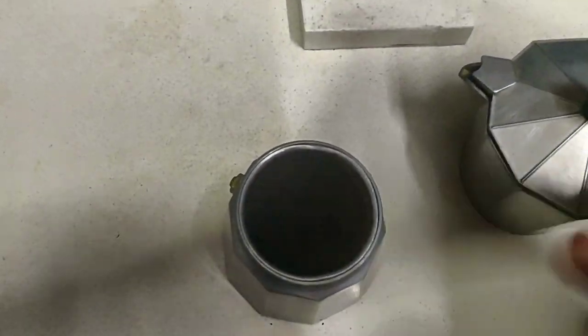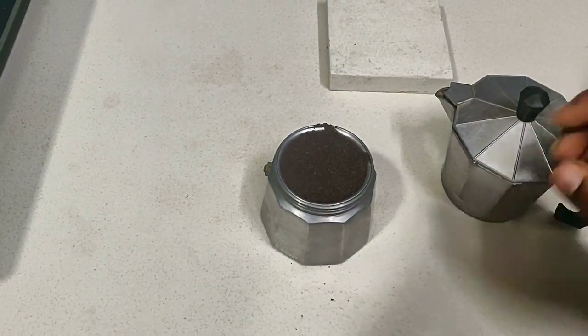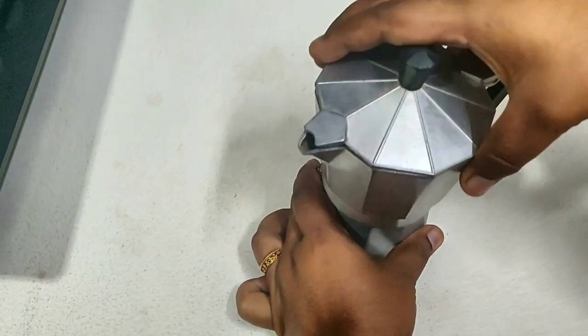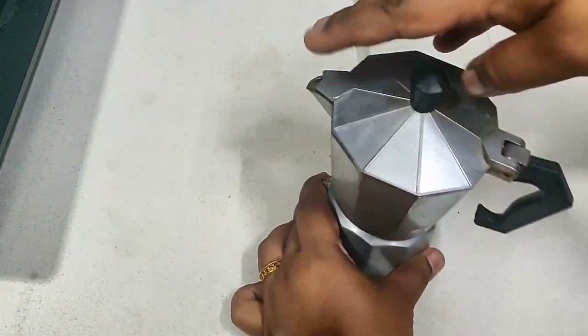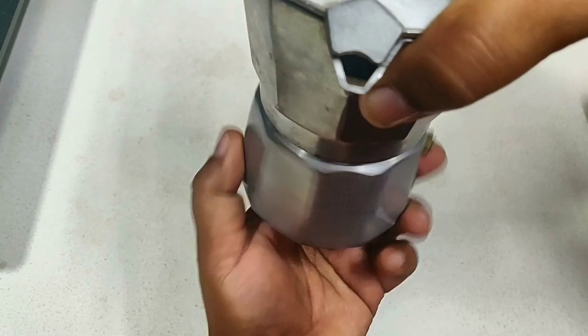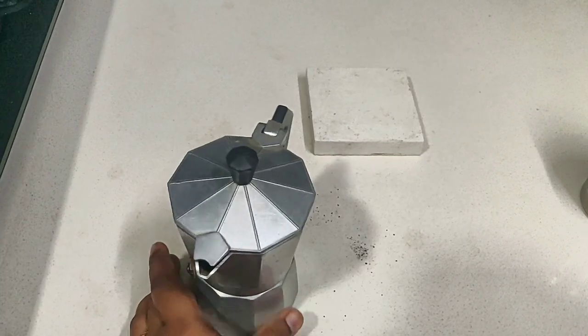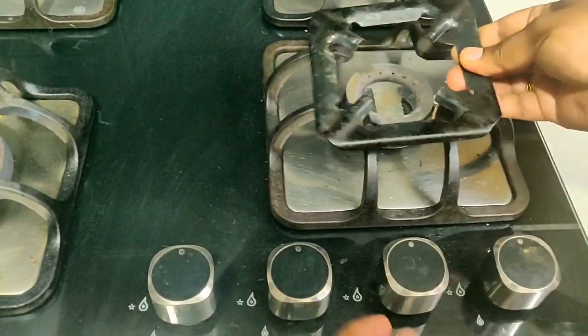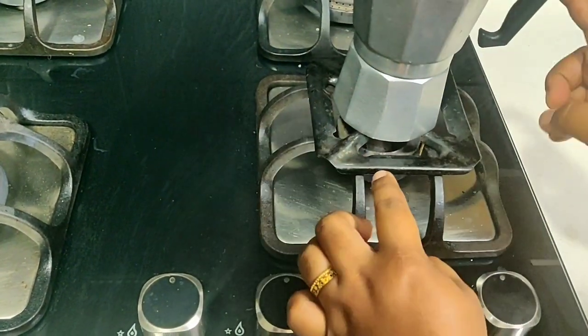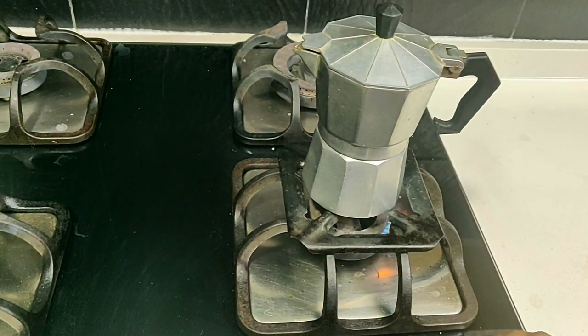All right, let's close the lid. Ensure that the lid is very tightly closed. I'm using this extender so that I can place the pot easily on the burner, and ensure that the handle is not directly above the flame.